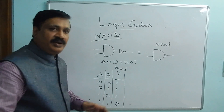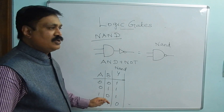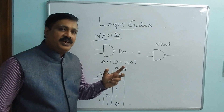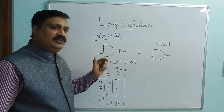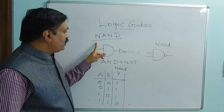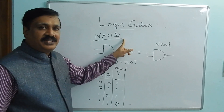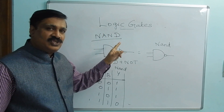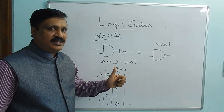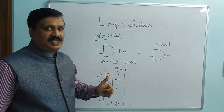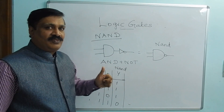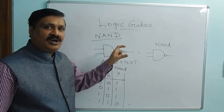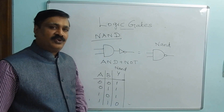So far we have seen three basic gates and two more gates — the NOR gate and the NAND gate. NOR gate and NAND gates are called universal gates. Let us see in the next class how NOR and NAND gates are called universal gates. Thank you.